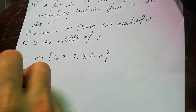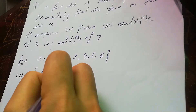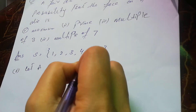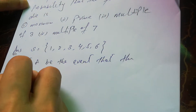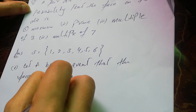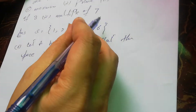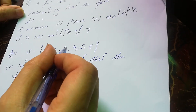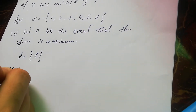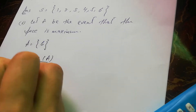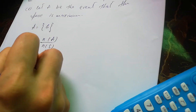First, we calculate event A. Let A be the event that the face is the maximum. The maximum face on the die is 6, so A = {6}. The probability of A is equal to n(A) divided by n(S). n(A) is 1 and n(S) is 6, so P(A) = 1/6.